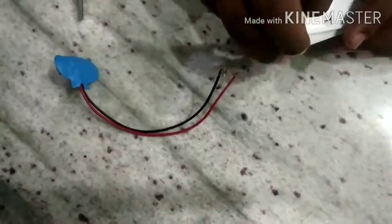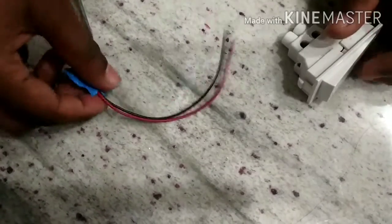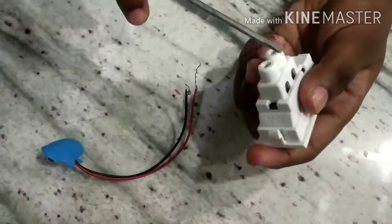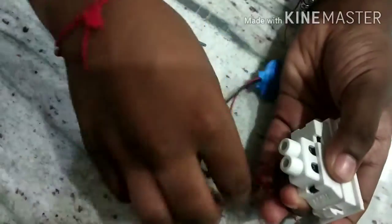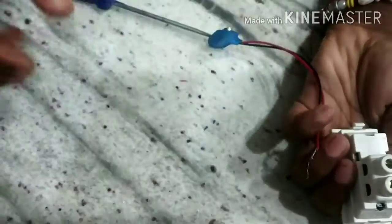Now take your switch, screwdriver, and 9 volt battery connector. Loosen the screw of your switch and then put the positive wire of the 9 volt battery connector into one pin of the switch and then tighten the screw.